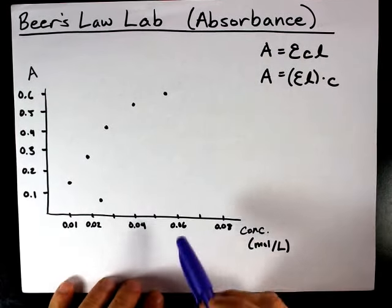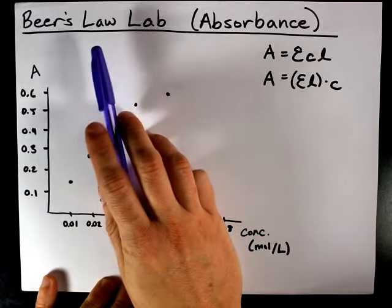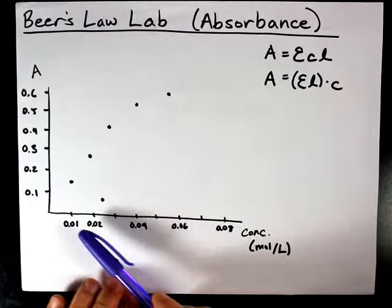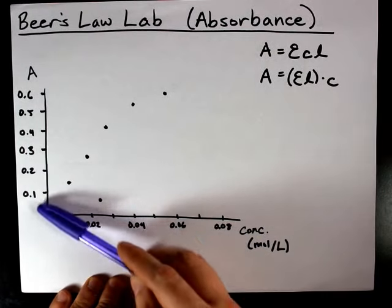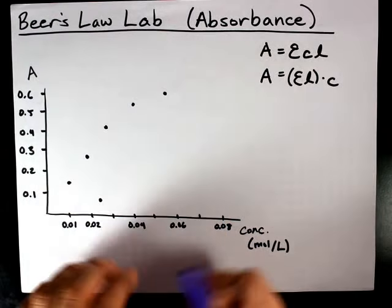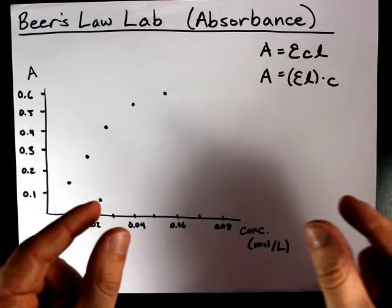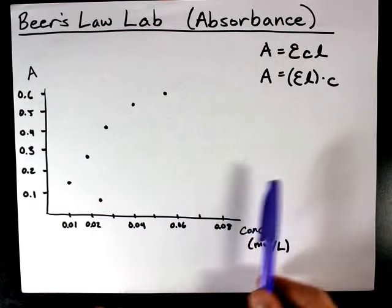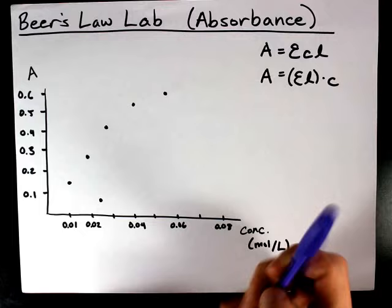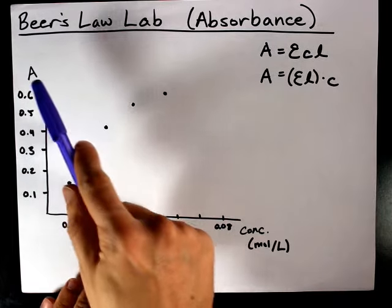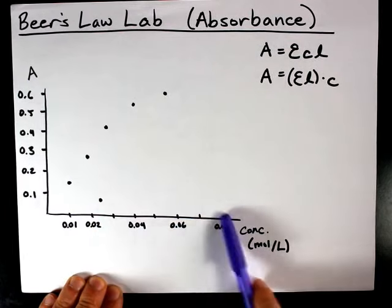All right, if you have done a lab about Beer's Law, you probably have a bunch of concentration and absorbance data. You've created several standardized samples of a chemical, put them into little cuvettes, and measured the absorbance of them in a spectrophotometer.